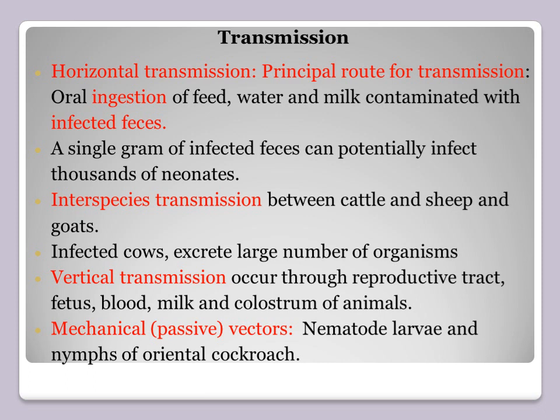Interspecies transmission is observed between cattle, sheep, and goat. Infected cows excrete large numbers of organisms in feces. Vertical transmission is also possible through the reproductive tract, fetus blood, milk, and colostrum — from mother to offspring. Mechanical or passive vectors also transmit the infection, including nematode larvae and nymphs of the oriental cockroach.